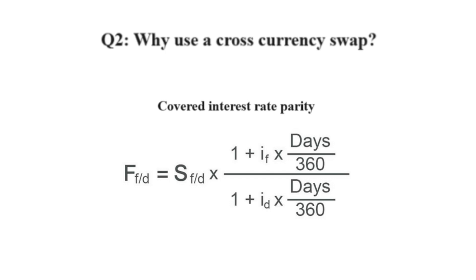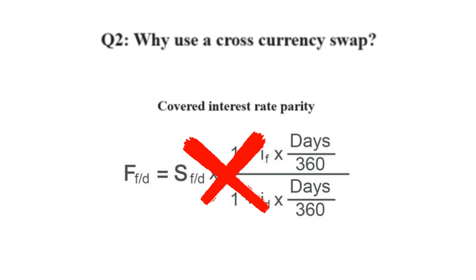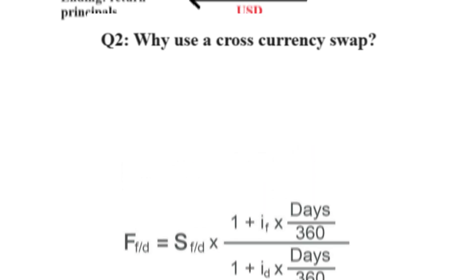In reality, this interest rate parity does not always hold. So one can actually get a higher return by using a cross-currency swap to convert domestic currency to foreign, invest in a foreign bond, and then convert back to domestic currency at the end of the swap.